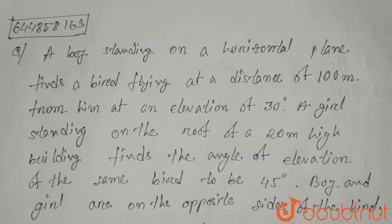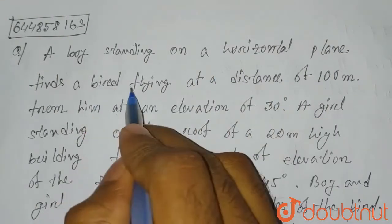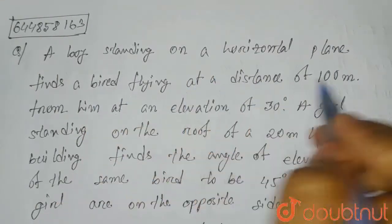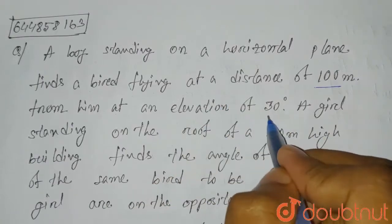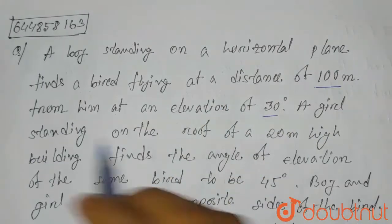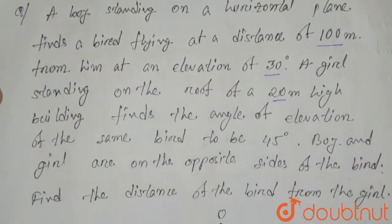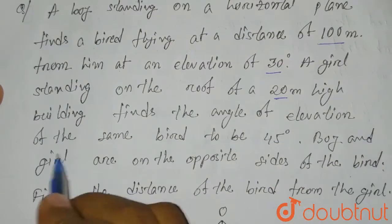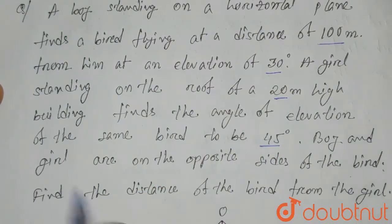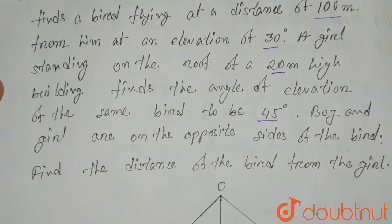Hello everyone. The question is: a boy standing on a horizontal plane finds a bird flying at a distance of 100 meters from him at an angle of elevation of 30 degrees. A girl standing on the roof of a 20-meter high building finds the angle of elevation of the bird to be 45 degrees. The boy and girl are on opposite sides of the bird. Find the distance of the bird from the girl.